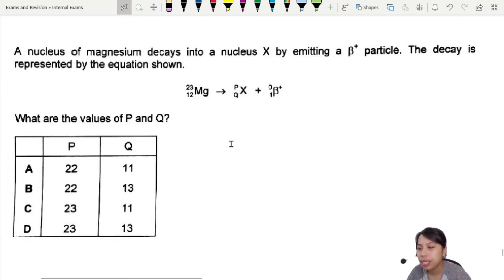A nucleus of magnesium decays into a nucleus X by emitting a beta particle. Here's a nice equation for us. The decay is represented by the equation shown. What is the value of P and Q?